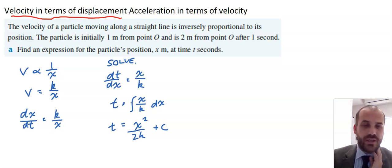Now, from there, we're using whatever initial information we have. So we have the particle is initially 1 meter from point O and it's 2 meters from point O after 1 second. Now, because we've got two unknowns in this, a k and a c, we can sub in these points here.